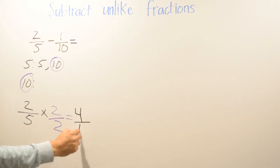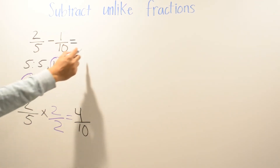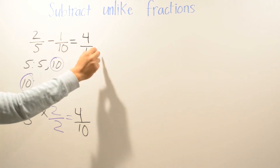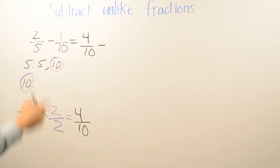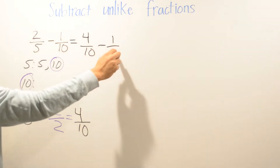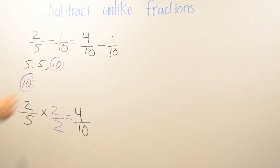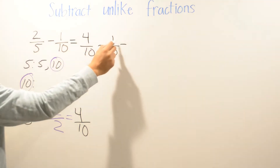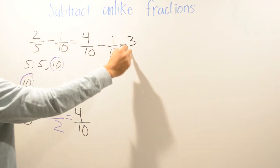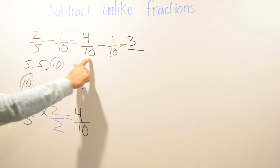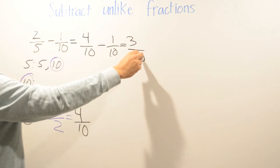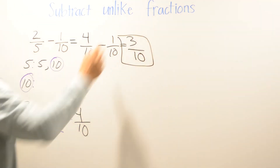We multiply 2 times 2 is 4, and 5 times 2 is 10. So we go: 4/10 minus 1/10 — we didn't have to change that denominator. Now we subtract: 4 minus 1 is 3, and the denominator always stays the same, which is 10. So your answer for this problem is 3/10.